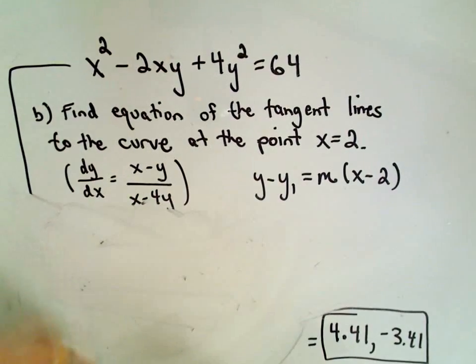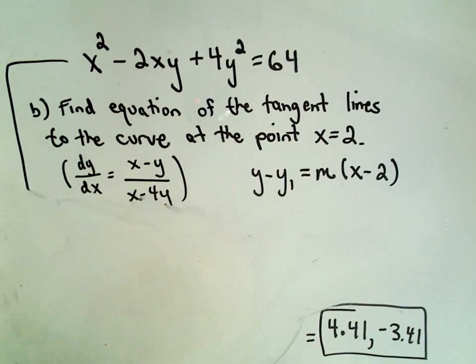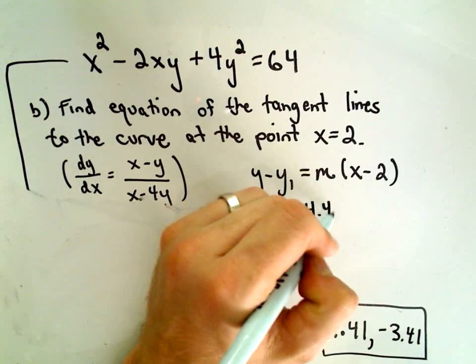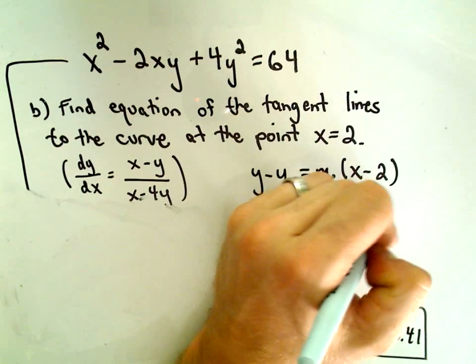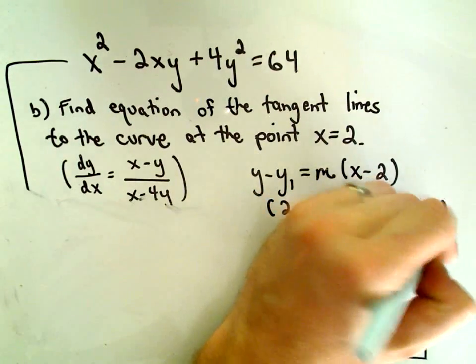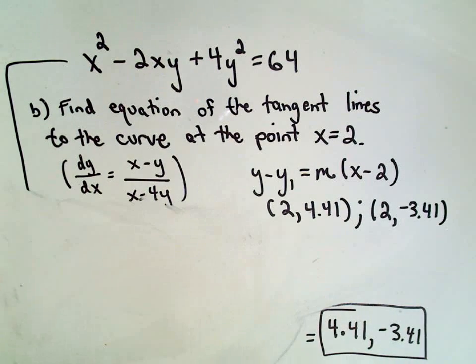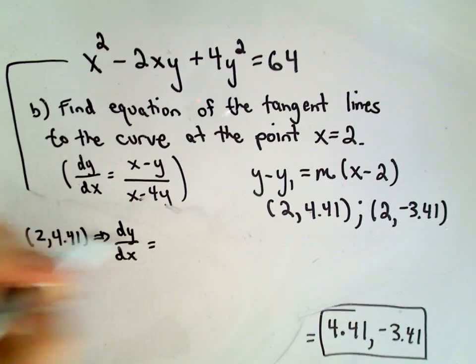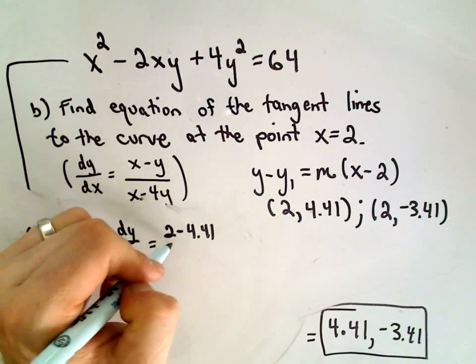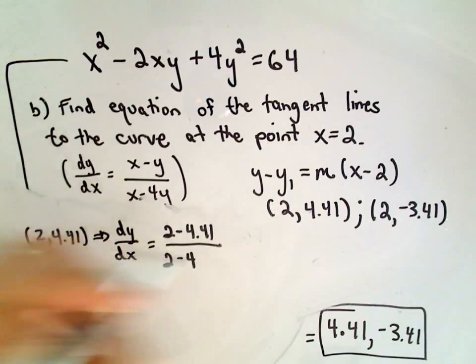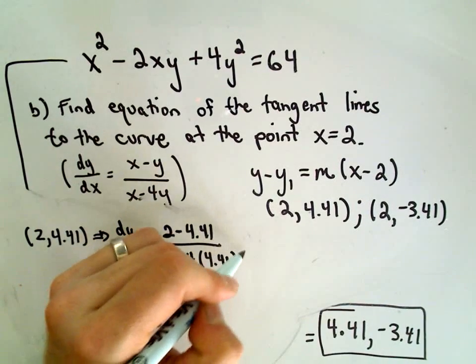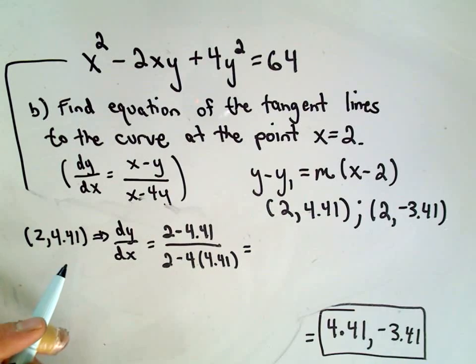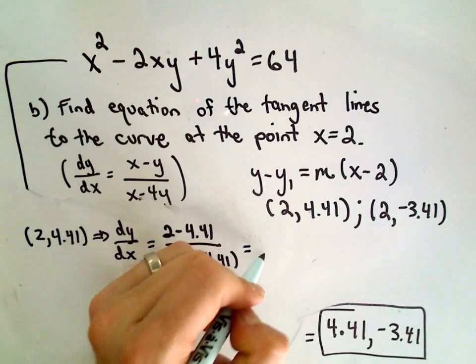All right, so basically we have two points. Okay, so we know that we're going to be using the points 2, 4.41, and then our other point is going to be 2, negative 3.41. So again, the only things that we're really missing now are the slopes of the tangent lines. So if we evaluate the slopes of the tangent line, let's say 2, 4.41. Well, the derivative at these points is going to be plug in x equals 2 minus 4.41, divided by x, which is 2 minus 4 times 4.41. Again, reducing this and simplifying, I'm getting this to be 0.15.